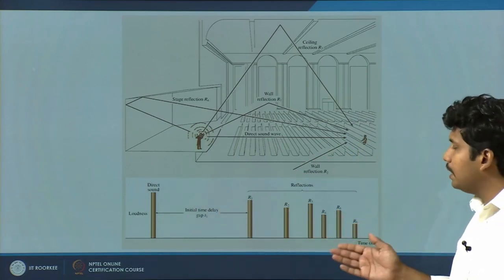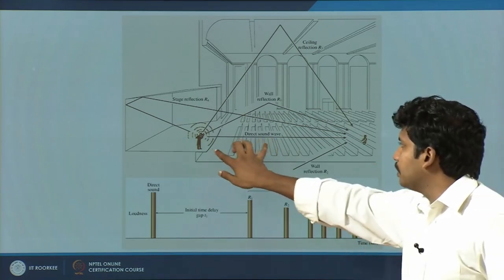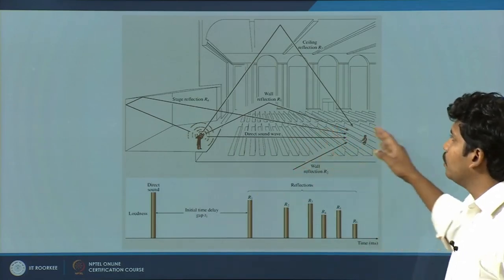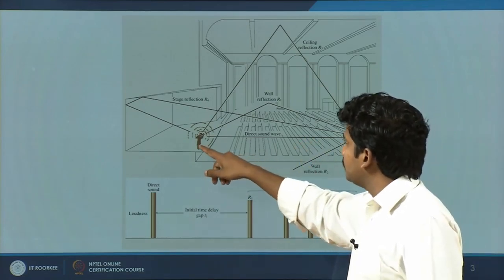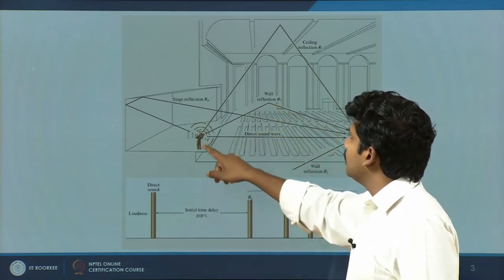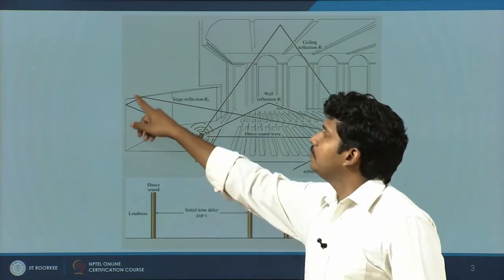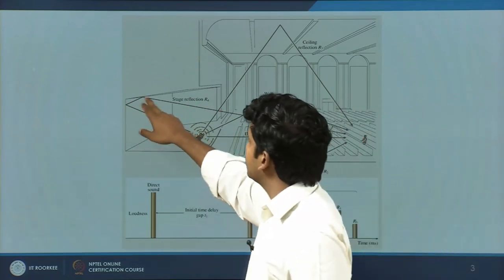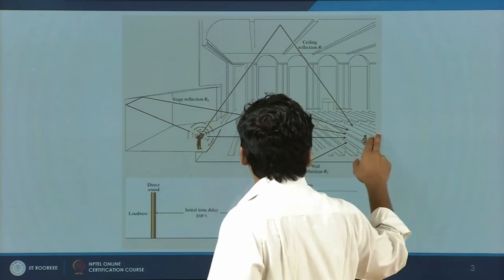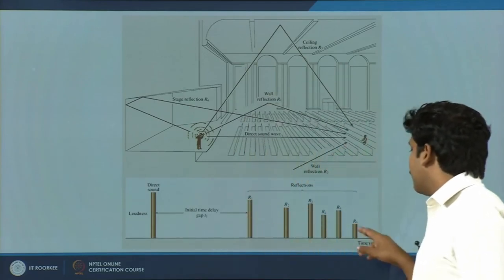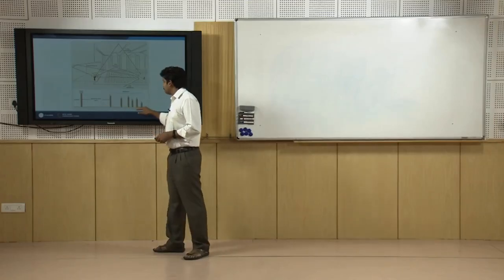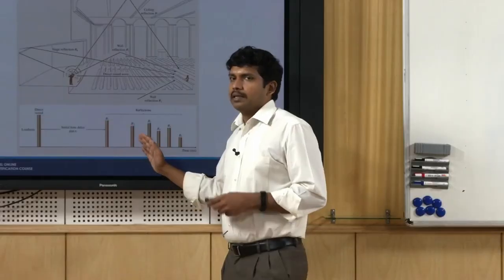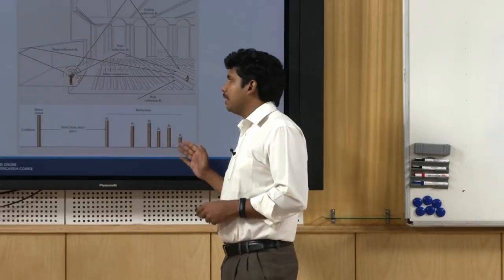The millisecond value increases - the time duration - that is what is called the initial time delay gap. Say it is 40 milliseconds, 50 milliseconds as you go further. Then you will have reflections: wall reflections, ceiling reflections, floor reflections - second, third, fourth reflections. First reflection, second reflection - it may go hit somewhere in the rear wall, side wall and come back. You will have a lot of reflections, and if you tally them you get values in terms of clarity C50 or clarity C80.